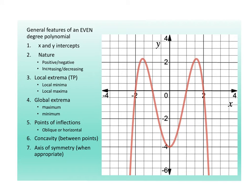If you are given this graph and asked what is the degree, the answer is 4 — because it has 4 roots. Unless you are given something where you can't tell how many degrees there are because you really don't know what's happening in a region — then you cannot tell. This one you can because you know where the turning points are.